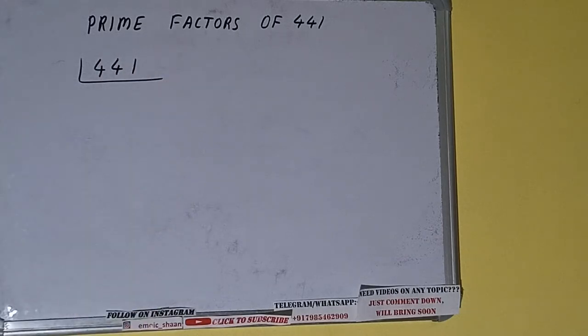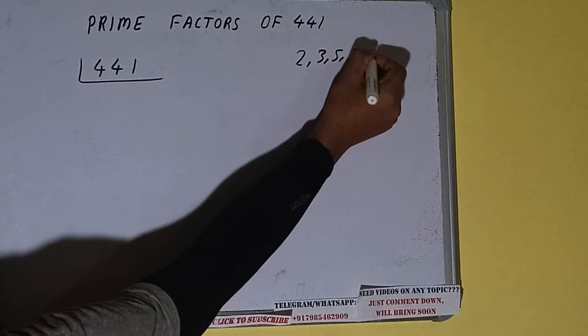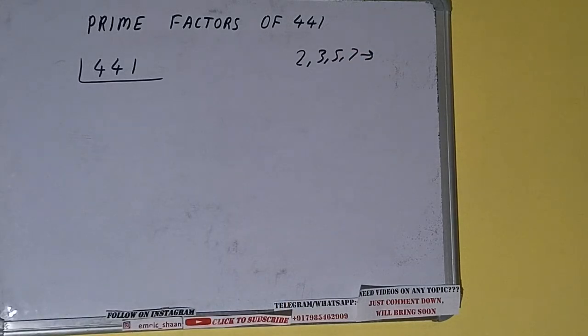The next thing we need to know about is what are prime numbers. Prime numbers are numbers that are divisible by one and the number itself, like 2, 3, 5, 7, and so on.